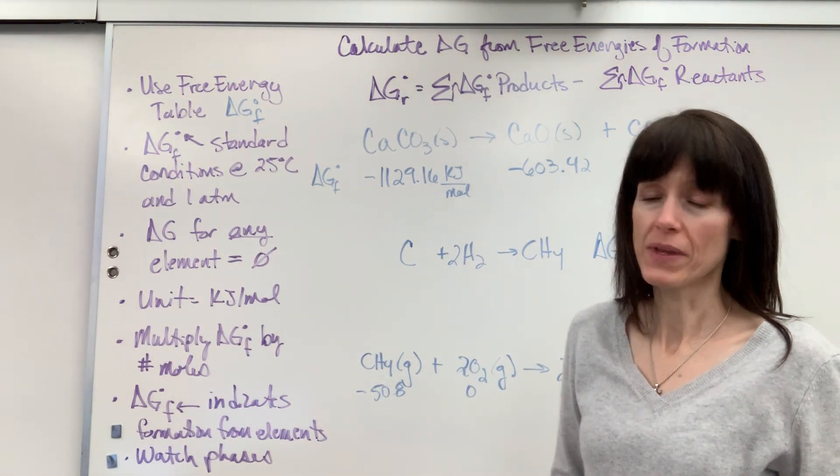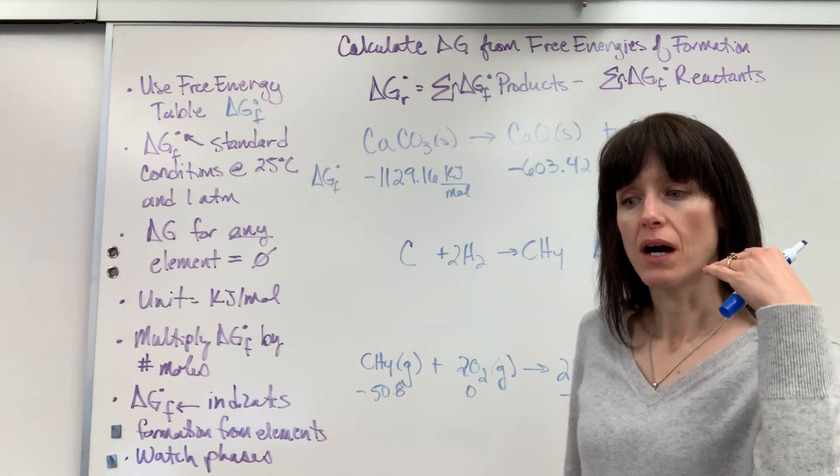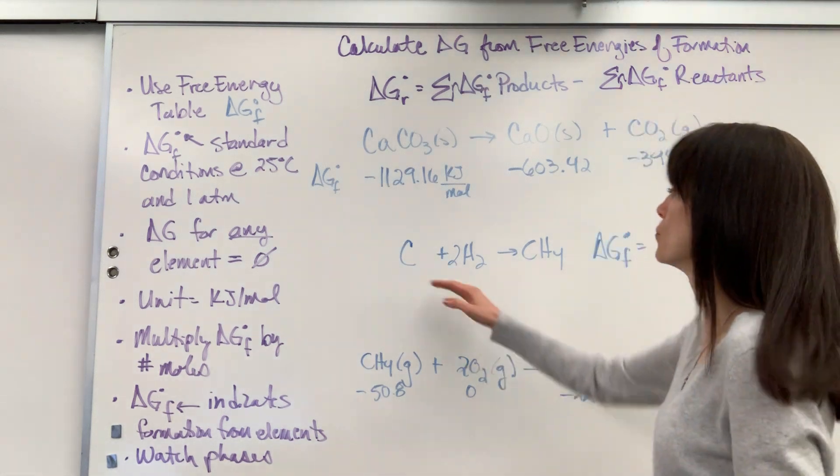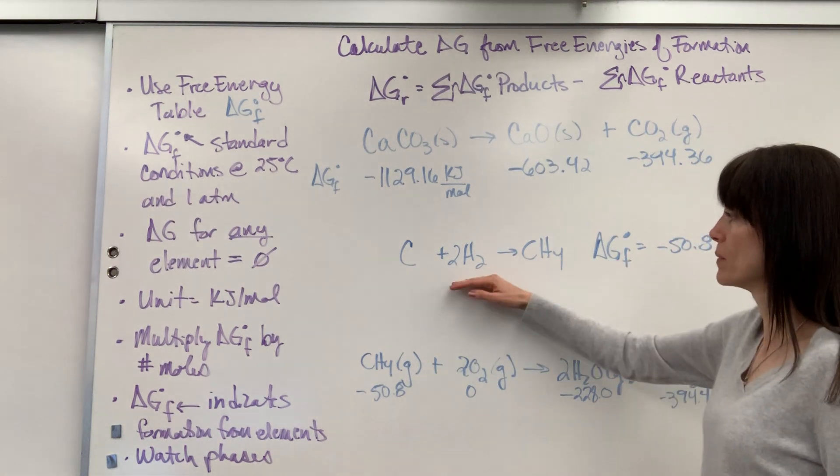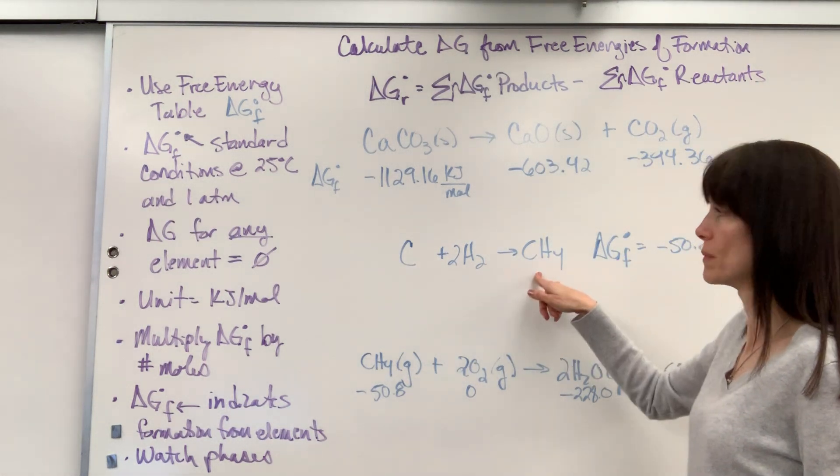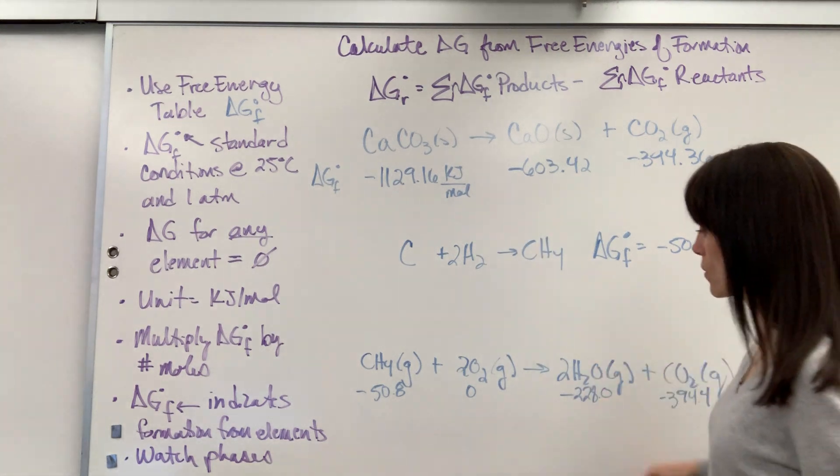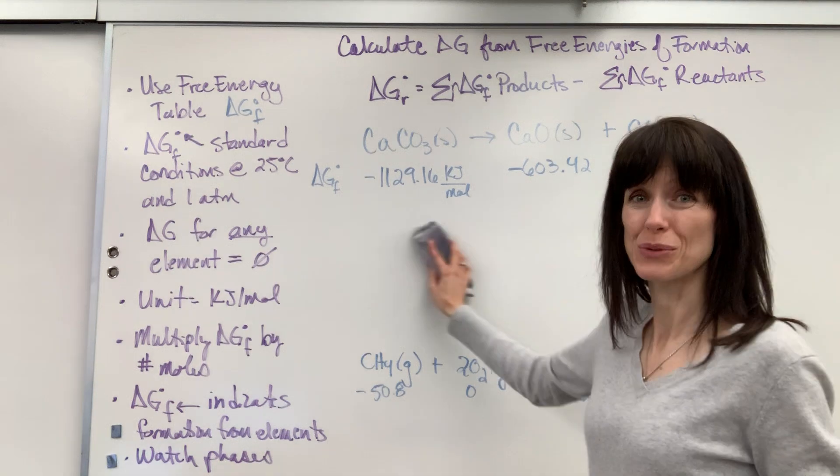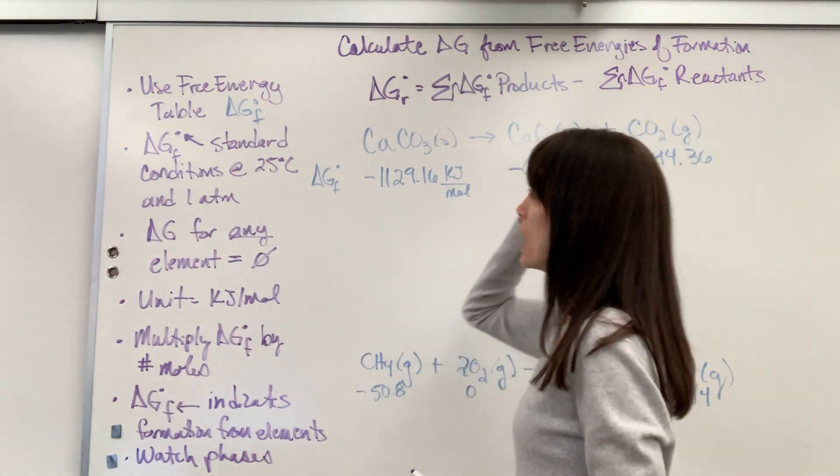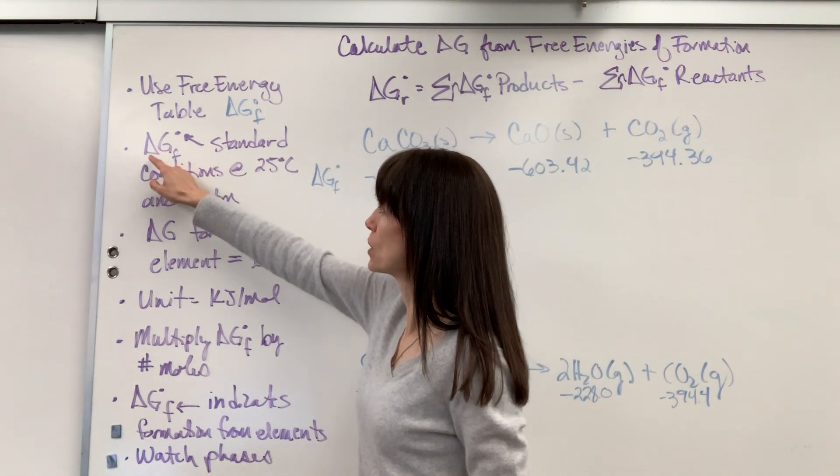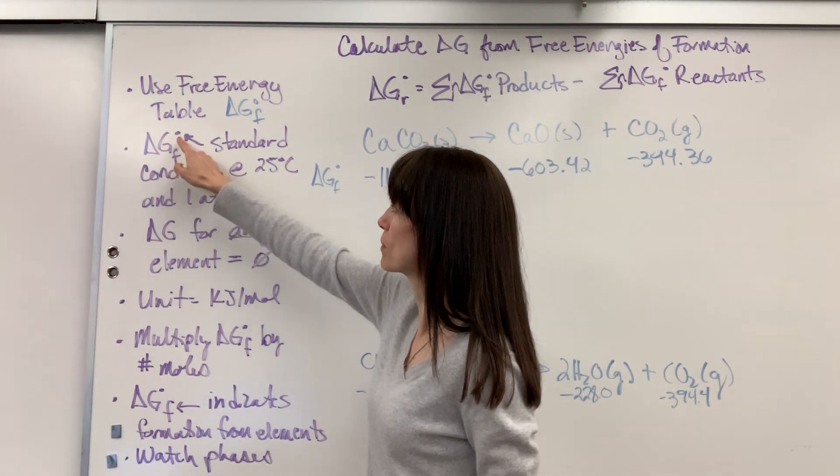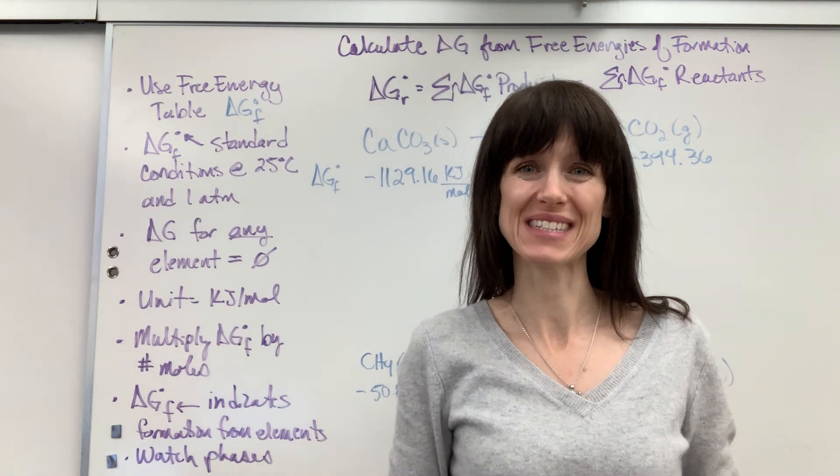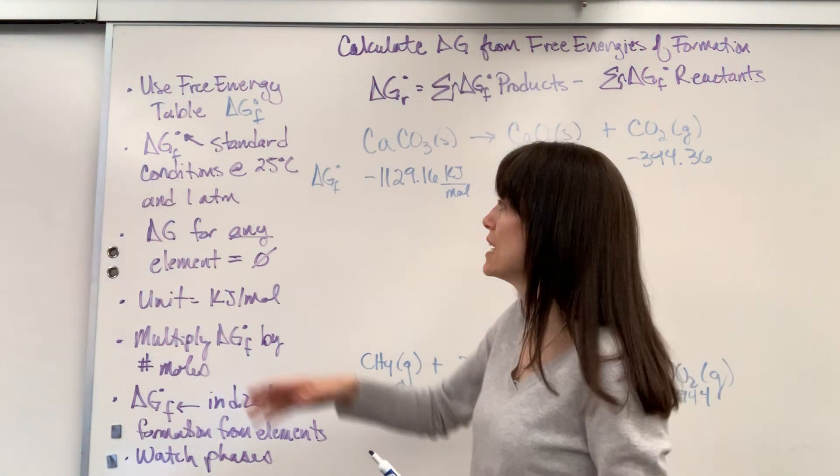Now, if I were to look up on a table, methane, here it is right here. There's methane gas. All it says is negative 50.8. It's understood that that number means this is actually a chemical reaction, elements combining to form that product right there. This little naught right there, so we have change in Gibbs free energy formation, that naught indicates standard conditions. And for thermodynamics, standard conditions are 25 degrees C and 1 atm.